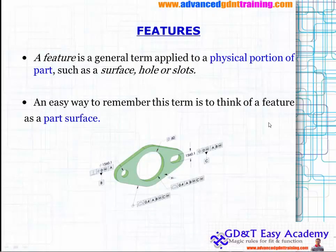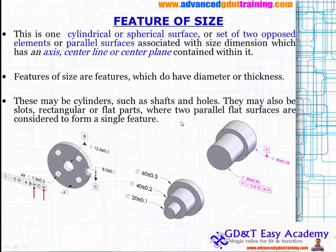Let us discuss about features. A feature is a general term used inside GD&T for interpreting and decoding the real scenario — the physical portion of a part such as a surface, a hole, a slot, or maybe a thickness. An easy way to remember this term is to think of a feature as a part surface.